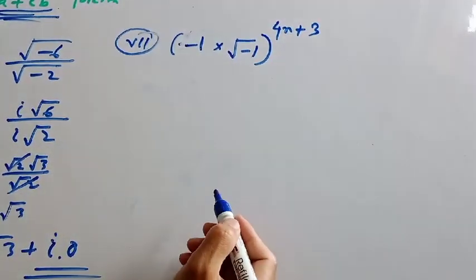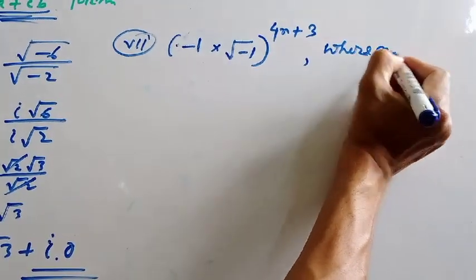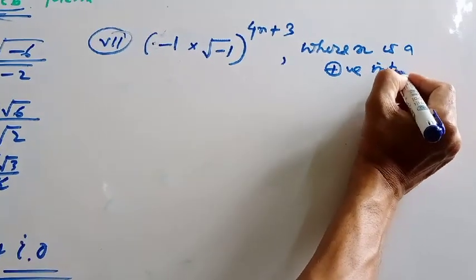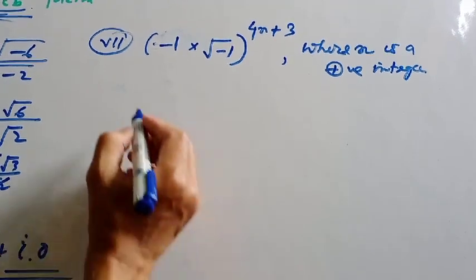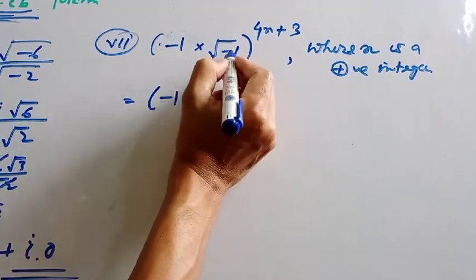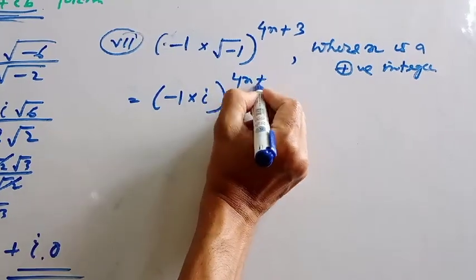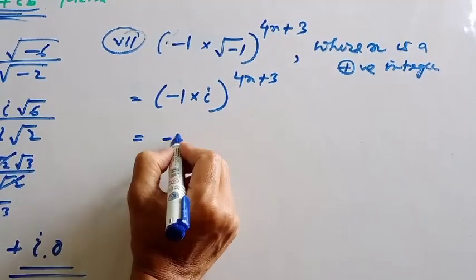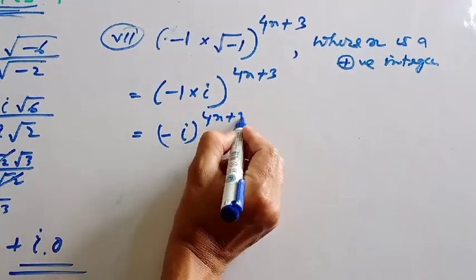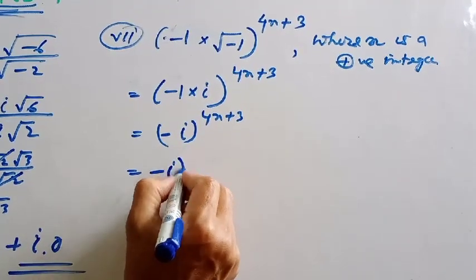Now for i to the power 4n plus 3, where n is a positive integer. We write this as minus 1 into root of minus 1, which gives i to the power 4n plus 3. Breaking it down part by part: minus i to the power 4n, multiplied by i cubed.